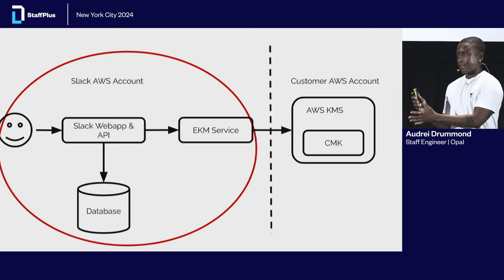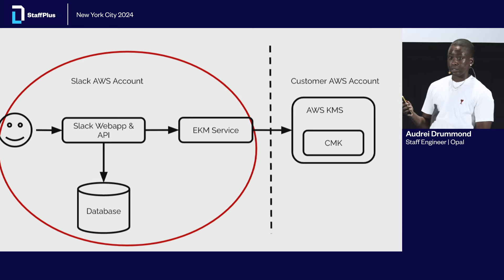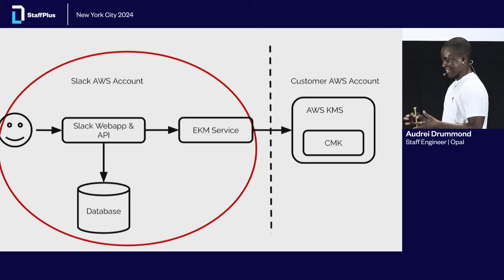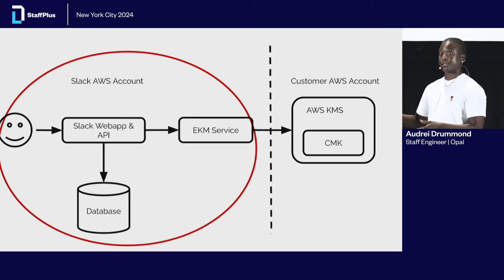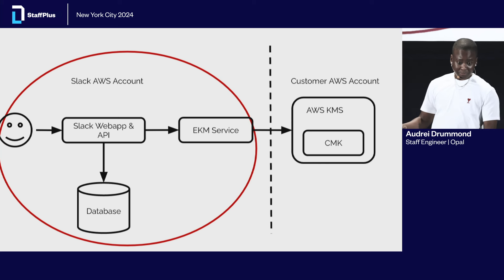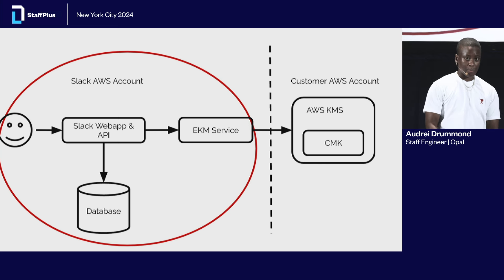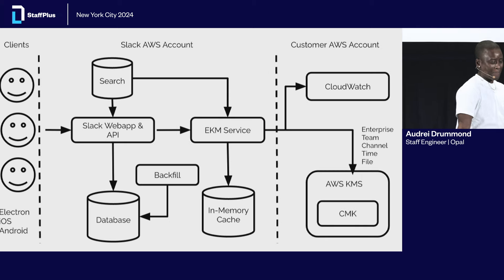Going back to that high-level overview, everything in the red circle — I tried to prototype that and see if I could get Slack to talk to the EKM service, then set a policy to show we could revoke access. Thankfully, the answer is yes. However, this is a little bit more of what the architecture ended up looking like — slightly more complicated.